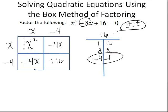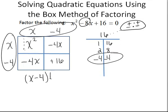Right here we have x minus 4 times x minus 4. So these are our two factors. And recall that you may also see them written like this: x minus 4, quantity squared.